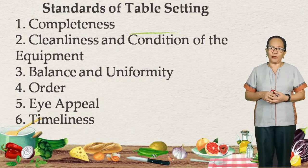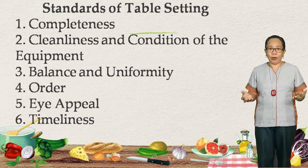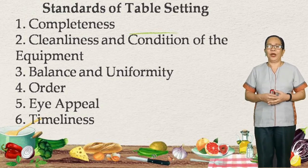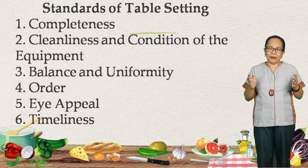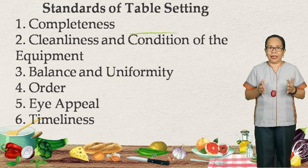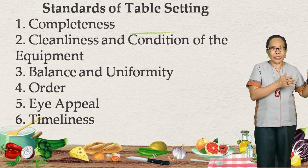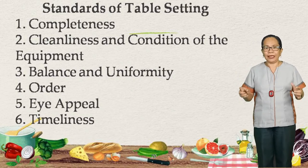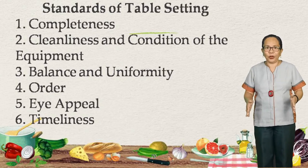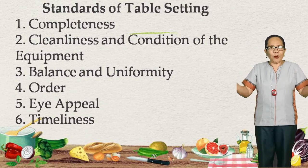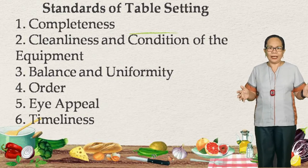Next is balance and uniformity — as seen in the American and French table service setups, it has to have balance and uniformity. Next is the order — the sequence of arrangement of all table appointments is based on their usage. Remember: if there are three forks on your left, and spoon and knife on your right, the one placed nearest to the plate is the one to be used first. And then of course, appeal — table appointments and utensils must already be appealing to the eye of the diner or customer.